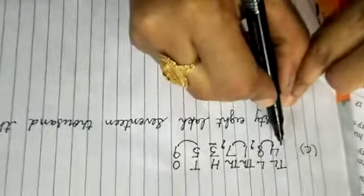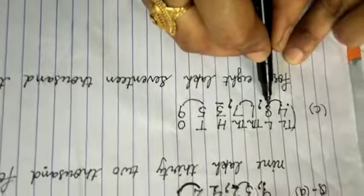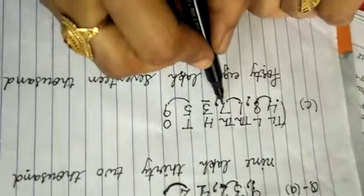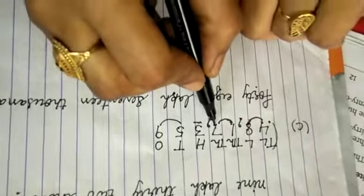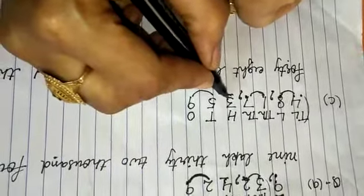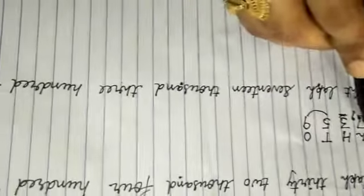Now start the number name from the left side. We have the lakh family, which has two digits: four and eight — forty-eight lakh. Next is the thousands family with two digits: seventeen thousand. The hundreds period has only one digit: three — three hundred. The ones period combined gives fifty-nine. So our number name is forty-eight lakh seventeen thousand three hundred fifty-nine.